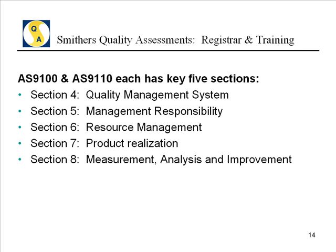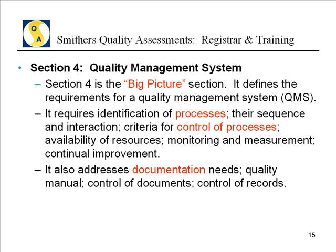Within the standard itself, there are five sections you would be certified to: sections four through eight. Section 4 can be thought of as the big picture section — it defines what any quality management system needs to produce good product and deliver it on time. It focuses on processes and their interaction, control of those processes, and documentation such as procedures, work instructions, and control of records.